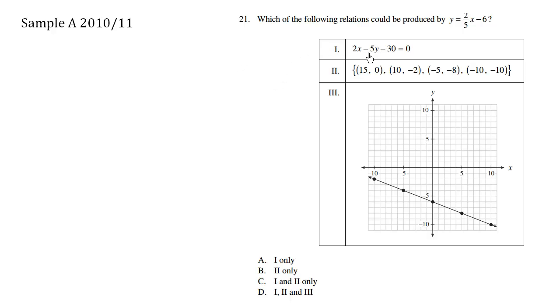Which of the following relations could be produced by y equals two-fifths x minus six? We have choices one, two, and three.